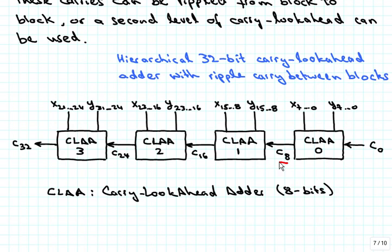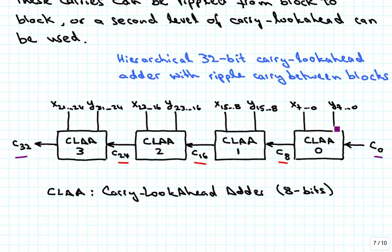In this first approach, we have the ripple carry signals C8, C16, C24, along with the carry input and carry output. Each block labeled CLAA is a carry lookahead adder for 8 bits. Within each block the carry is computed fast and output to C8, C16, and so on, but it has to ripple from one carry lookahead adder to the next, so we do start increasing delays as we go through all those carry lookahead adders.